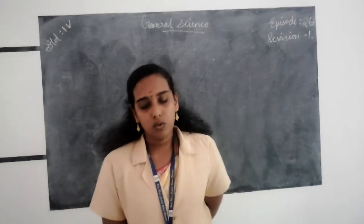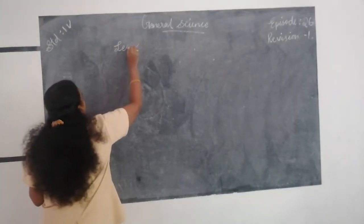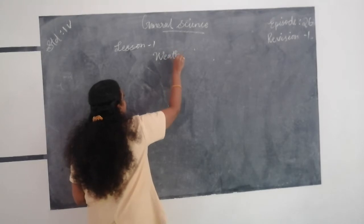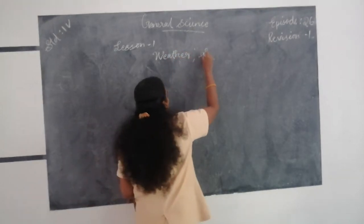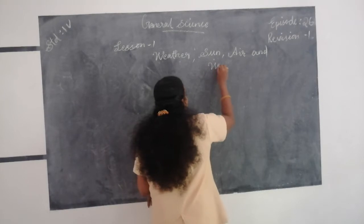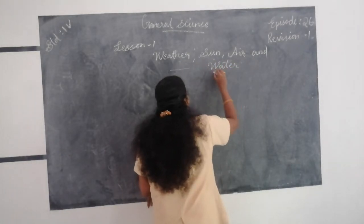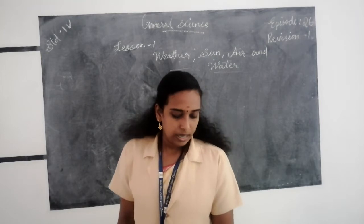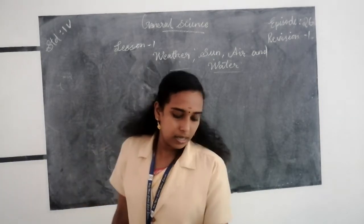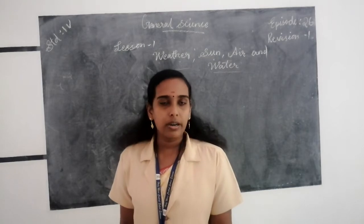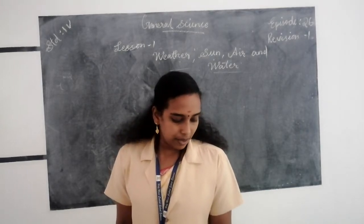Lesson 1: Weather, Sun, Air and Water. In this chapter we already discussed about weather, air, land breeze, sea breeze, then water, precipitation, impurities of water, purification of water and underground water.